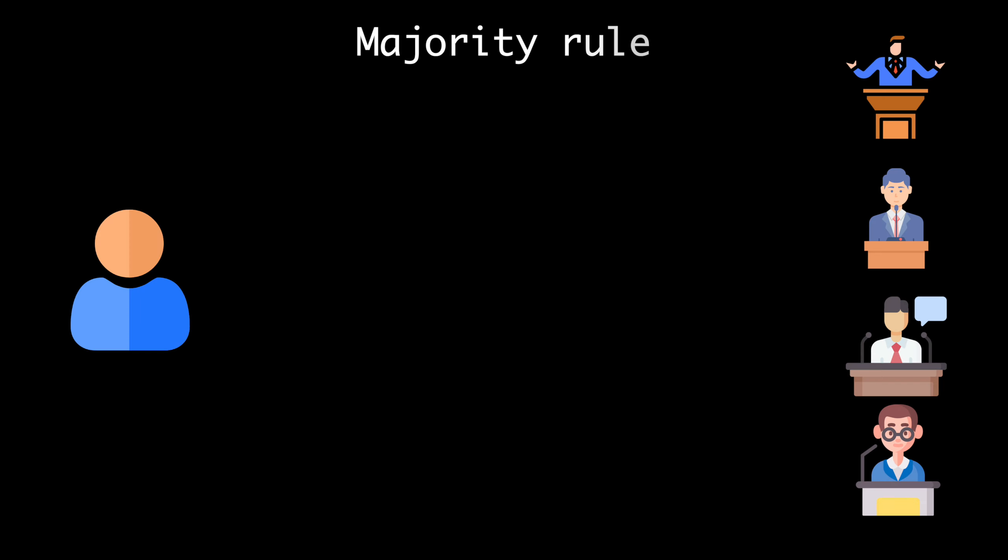So in a majority rule voting, each voter chooses only one candidate who receives a score of 1, and the rest get 0.